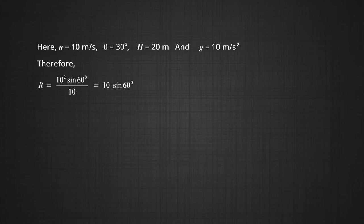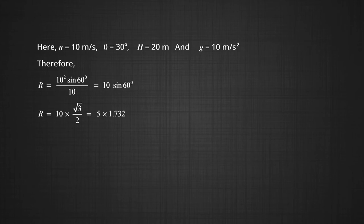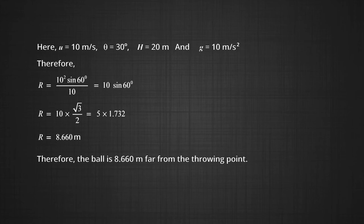R = 10 × (√3/2), since sin60° = √3/2. That is R = 5 × 1.732 = 8.660 m. Therefore the ball is 8.660 m away from the throwing point.